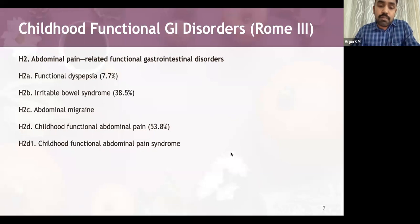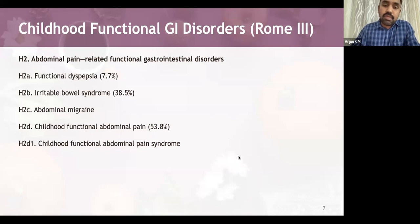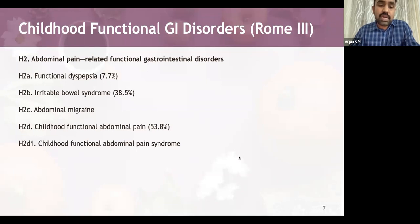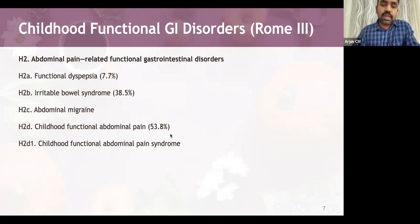Childhood functional abdominal pain NOS involves episodic or continuous abdominal pain with insufficient criteria to meet other functional GI disorder definitions, and it is the major contributor to functional abdominal pain in children. It is called childhood functional abdominal pain syndrome when there is daily loss of function and additional somatic symptoms such as headaches, limb pain, or difficulty sleeping. The most common is CFAP NOS, followed by irritable bowel syndrome and functional dyspepsia.